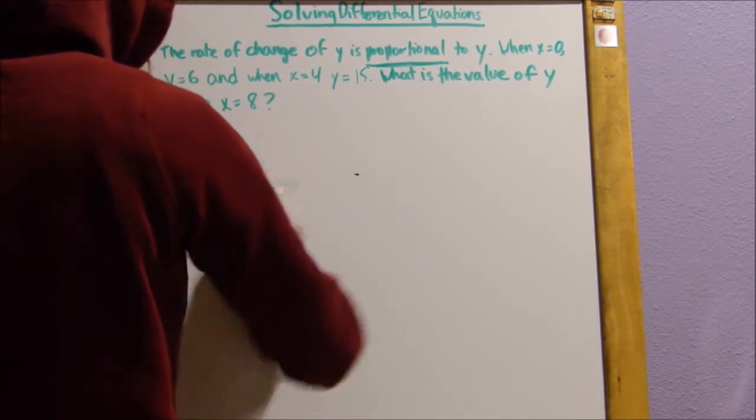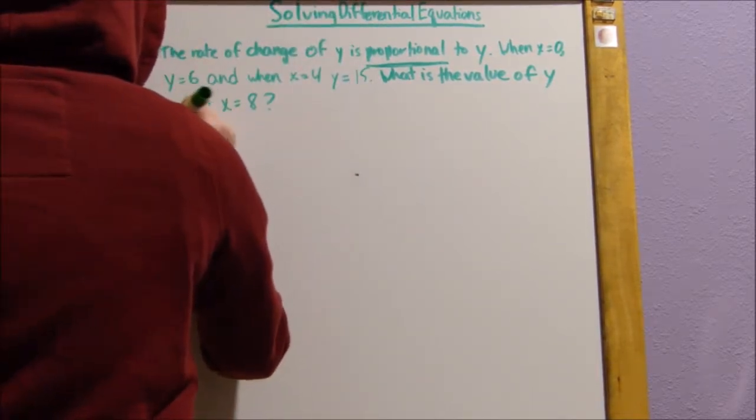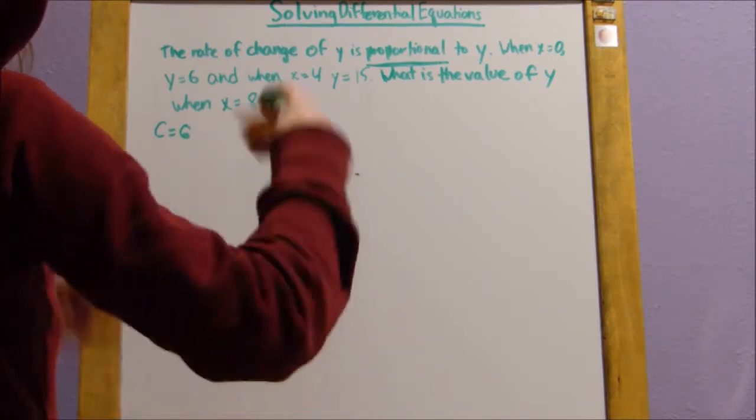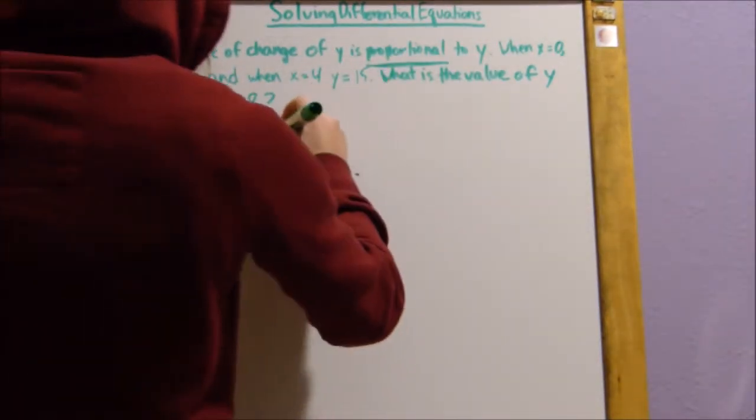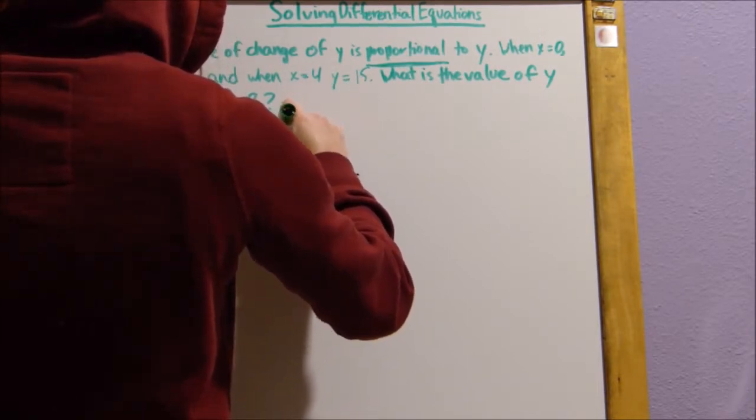Now that we've figured out that c equals 6, we're going to work backwards to find our k, which is our rate. So what we do is we plug in the stuff that we know again.